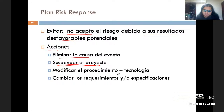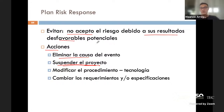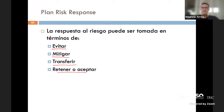Hay ciertos tipos de riesgos que uno nunca puede decir que va a evitar. Por ejemplo, cuando se han dado ataques de ransomware, lo que se hace es mitigar el impacto, porque uno no puede evitar que lo ataquen o que sea vulnerado. En ese caso el plan de respuesta fue mitigar, no evitar. Yo puedo decidir que para un evento lo evito, pero también podría decir: lo tolero, voy a seguir con el proyecto y voy a mitigar.